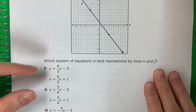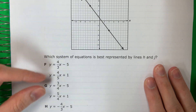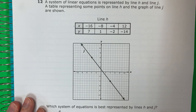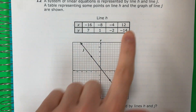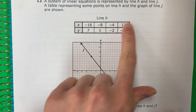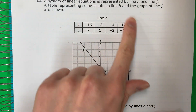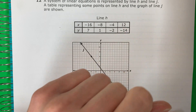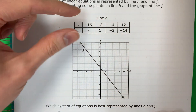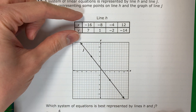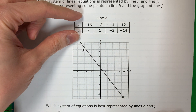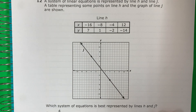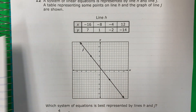Okay, so we have systems here. Basically, I need to make an equation in slope-intercept form for line H and for line J. So let's go ahead and do that.